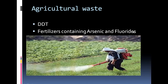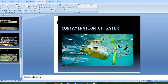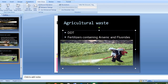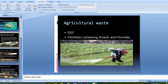Excessive use of fertilizers containing arsenic and fluorides also contaminates water. If fertilizers with arsenic are used in excess, the arsenic seeps down through soil pores and reaches the groundwater table, contaminating it — and arsenic causes cancer. Fluorides also cause cancer, different tooth and bone disorders, and if consumed in higher concentration, can cause neuromuscular disorders, which may be fatal to human life.